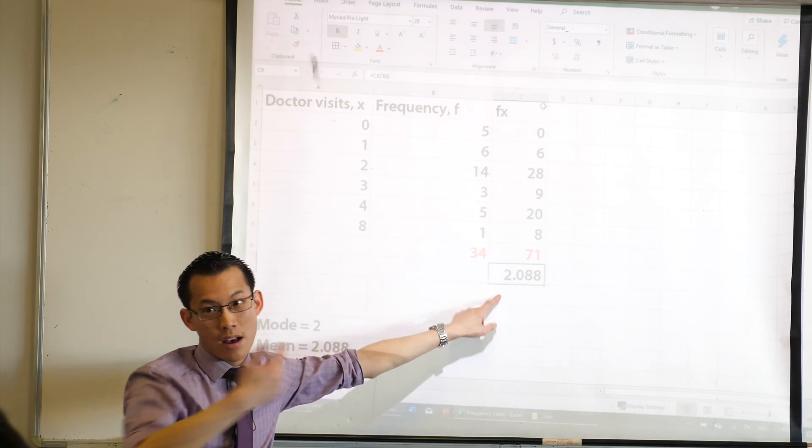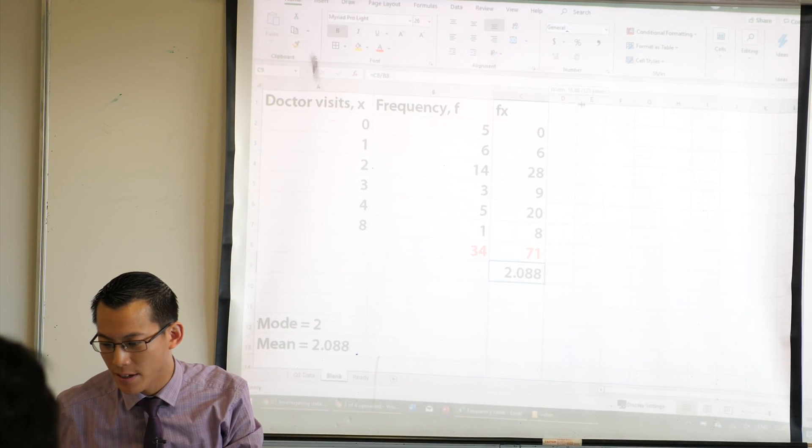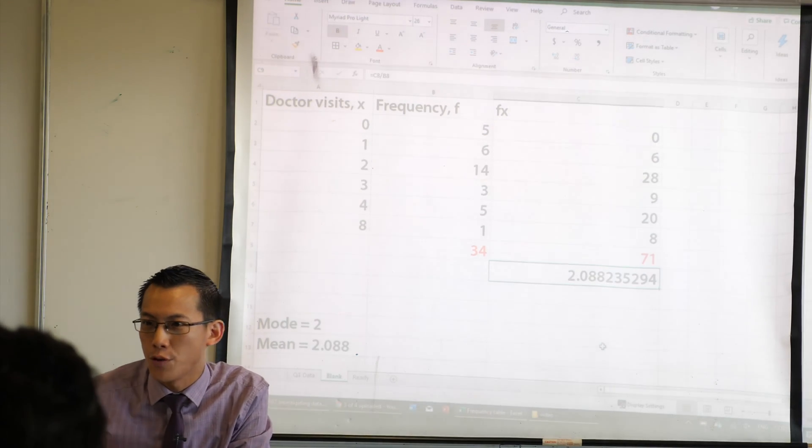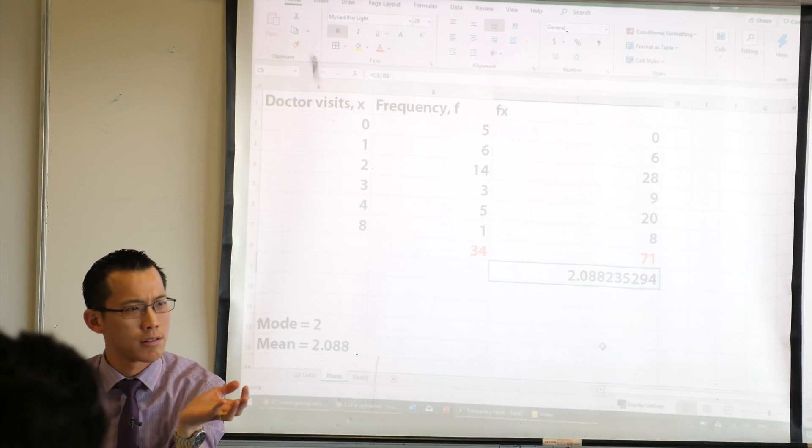Like how many digits can I fit? Four. I've only fit four, right? But if I make my cells a bit wider, you can see I've got more decimal places. Excel will just hide them if you can't fit them all in, if that makes sense. Okay?